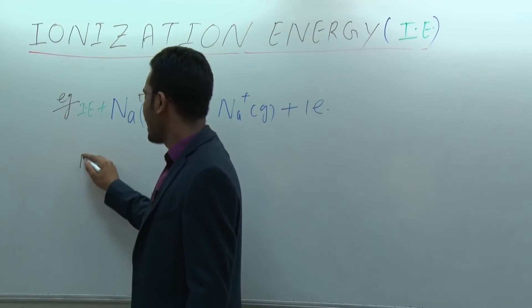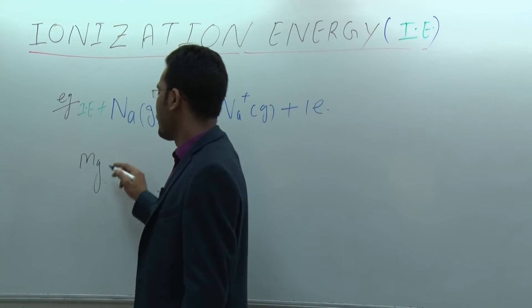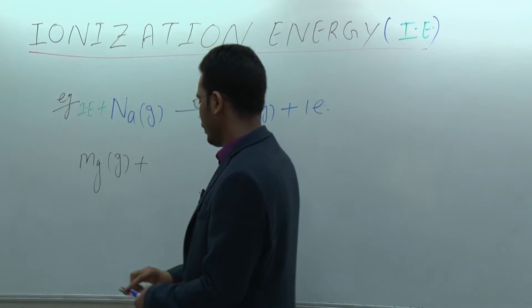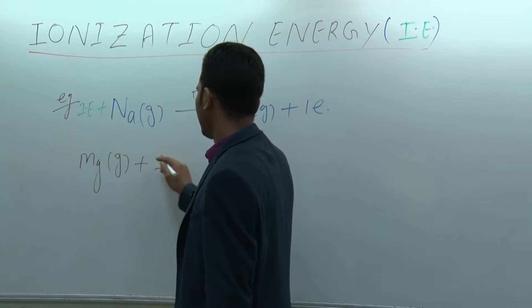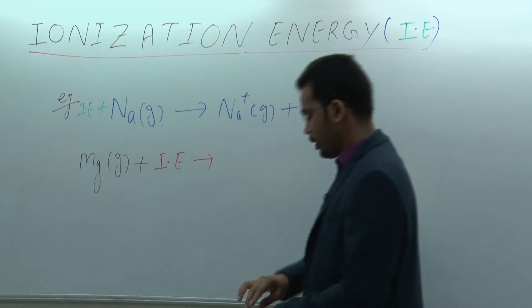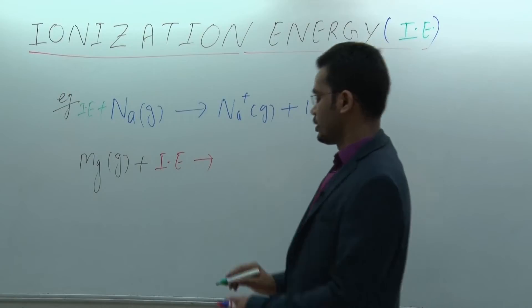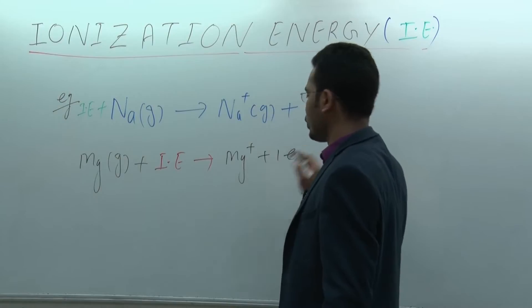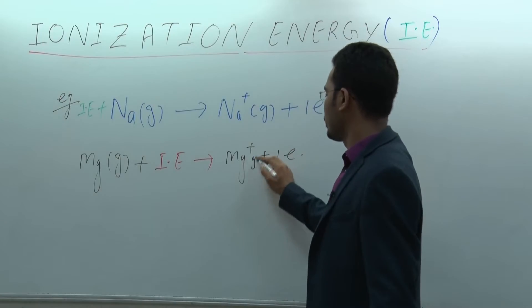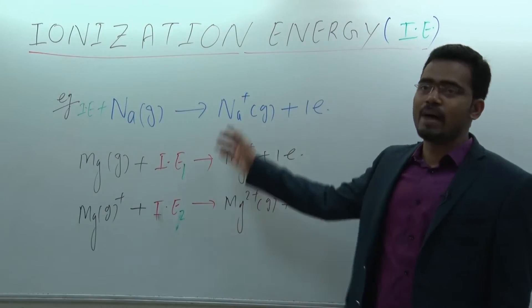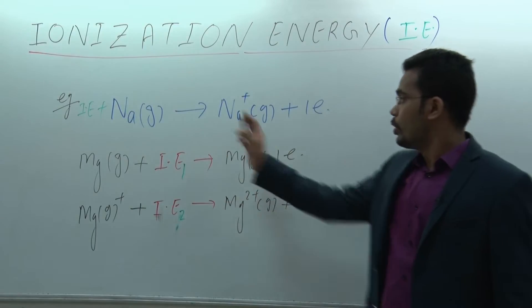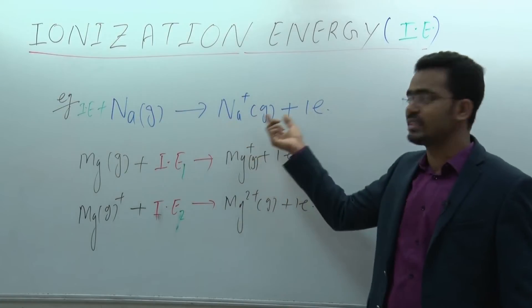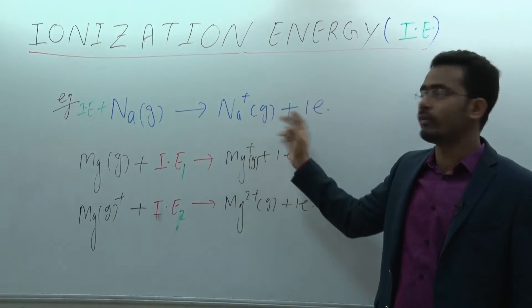Another example is magnesium. Magnesium gas takes some energy and an electron is released, forming Mg-plus plus one electron. This must also be in the gaseous state. These are examples of ionization energy. Sodium in the gaseous state loses an electron to form sodium-plus in gaseous state, and the energy required for this is called ionization energy.